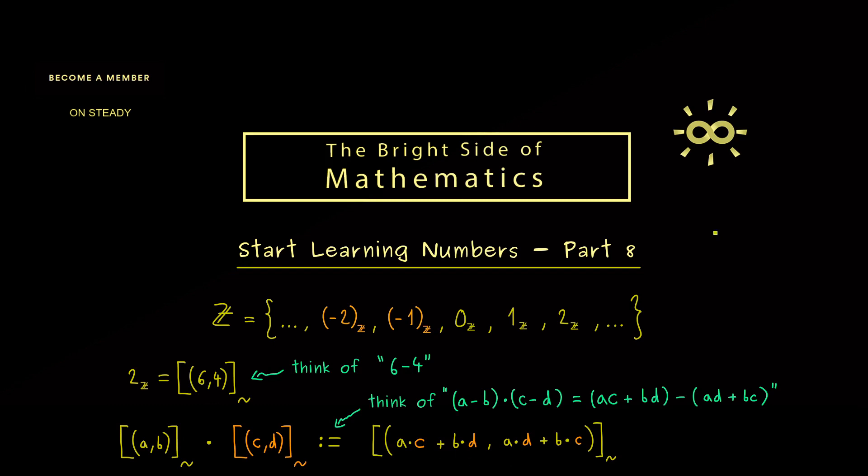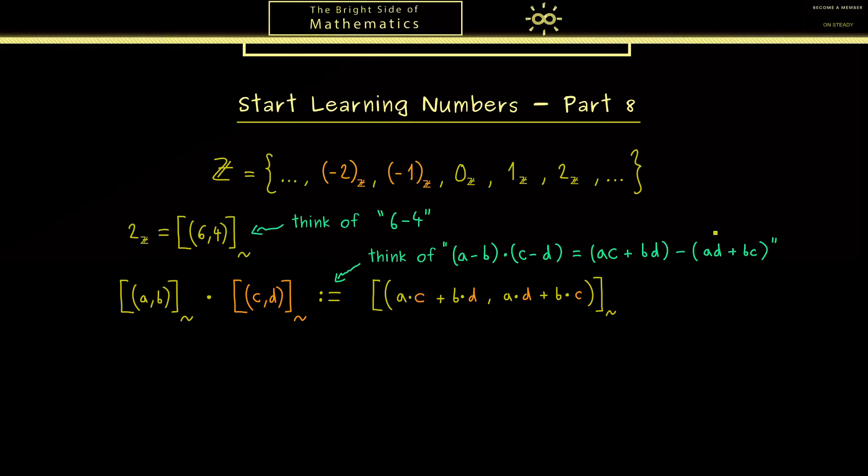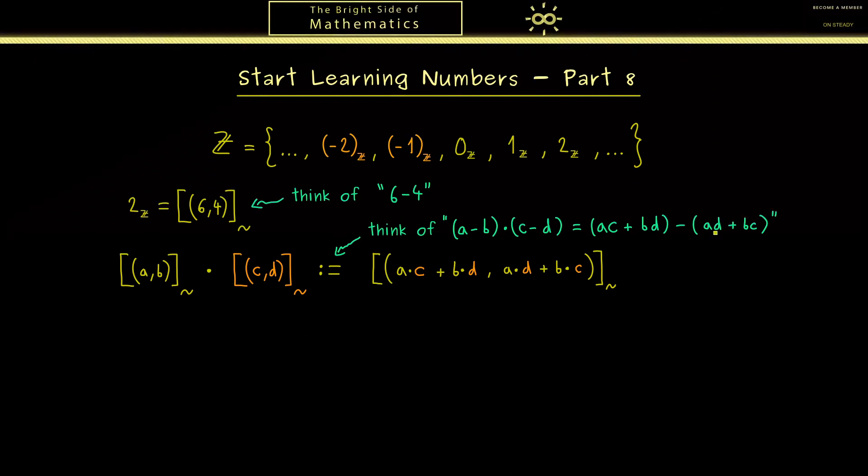By knowing the definition of the multiplication here, we can do exactly the same steps as we have done in the last video for the addition. The first point is this operation here is well-defined. So the result as an equivalence class does not depend on how we represent the two equivalence classes here. The procedure how one can show that you have already seen in the last video.